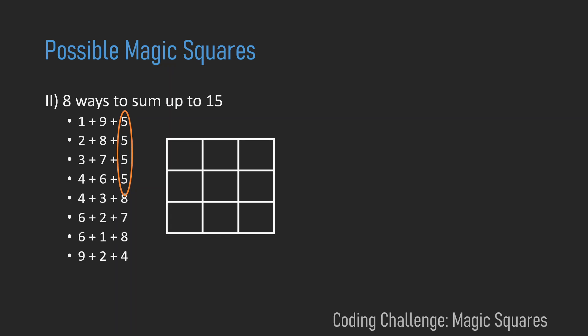And now when we look at the magic square, the only point that is part of four sums is the center. So now we have another fact about magic squares: that is that the center square is always 5.